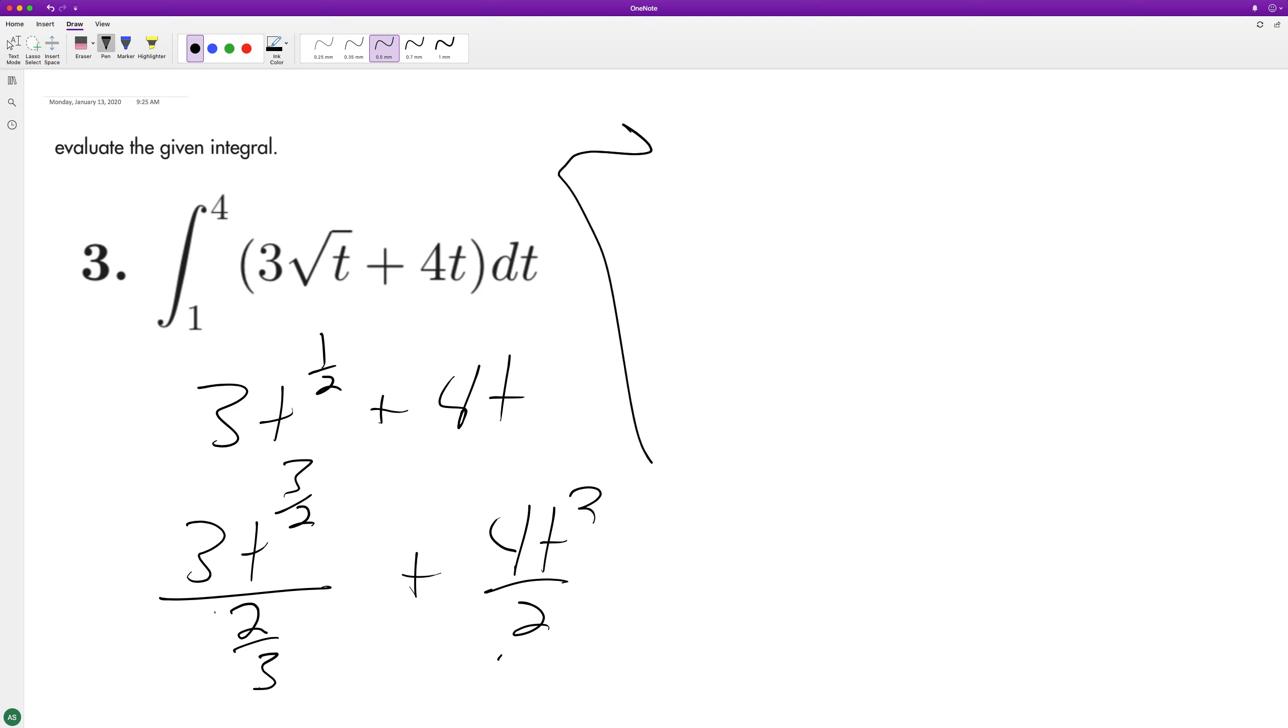So this ends up becoming two T raised to the three halves plus two T squared, all going from one to four.